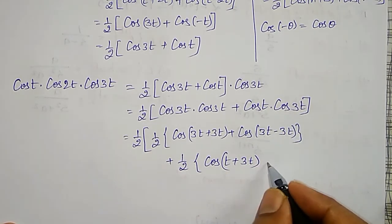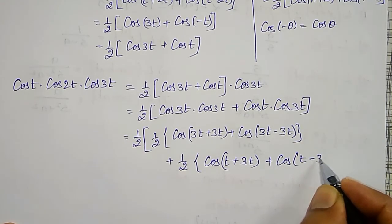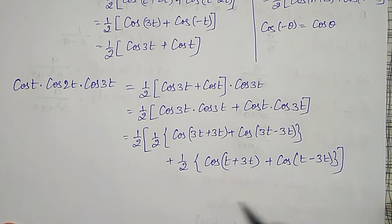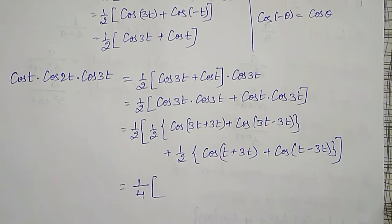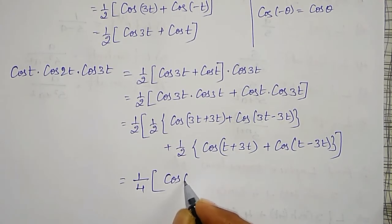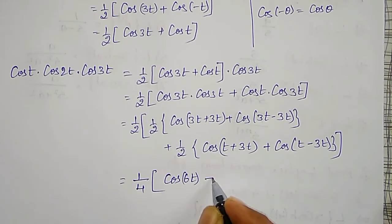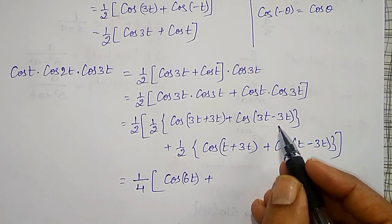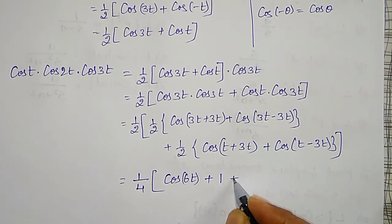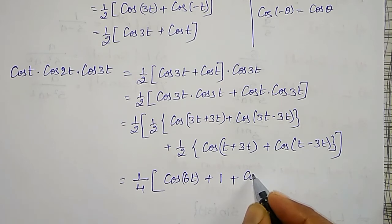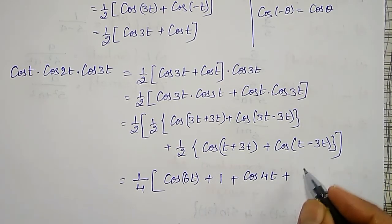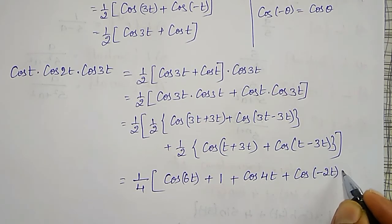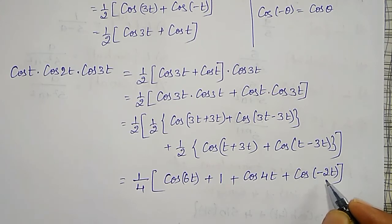Applying the formula: cos(3t)·cos(3t) gives 1/2[cos(6t) + cos(0)] and cos(t)·cos(3t) gives 1/2[cos(4t) + cos(-2t)]. Taking 1/2 as common, the overall factor becomes 1/4. Since cos(0) equals 1 and cos(-2t) equals cos(2t), the full expression simplifies to 1/4 times [cos(6t) plus 1 plus cos(4t) plus cos(2t)]. This is now a sum of trigonometric terms.